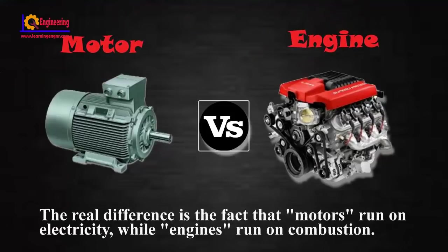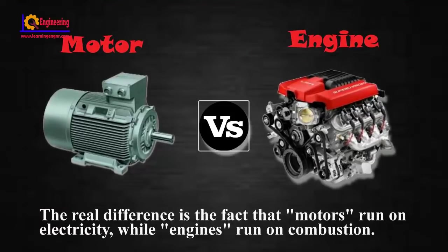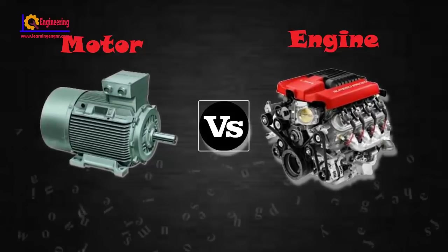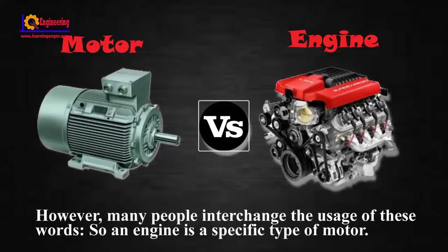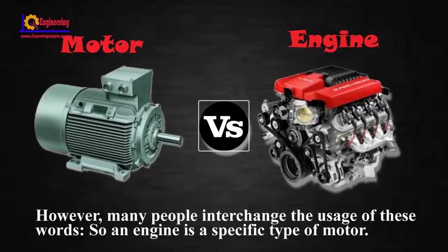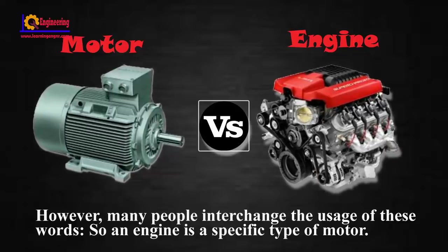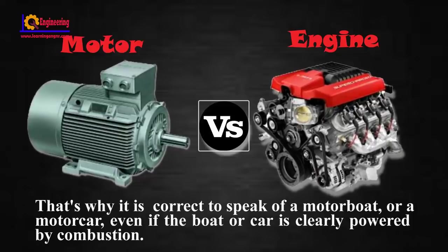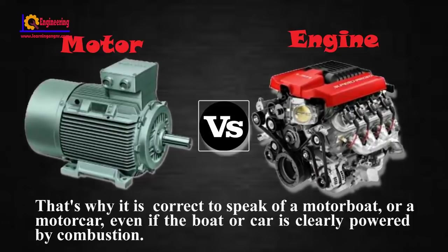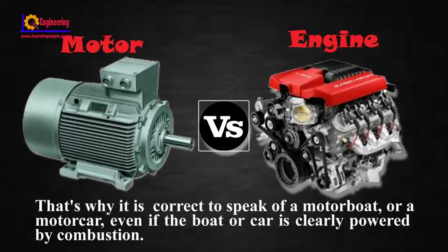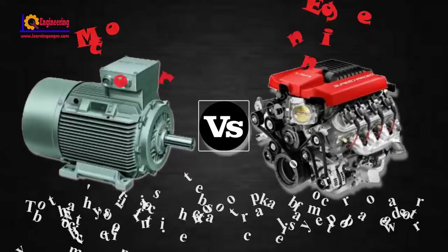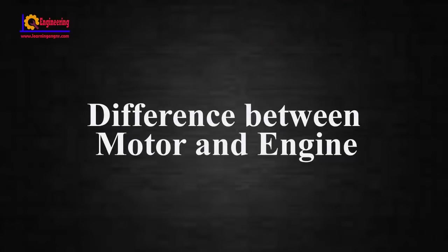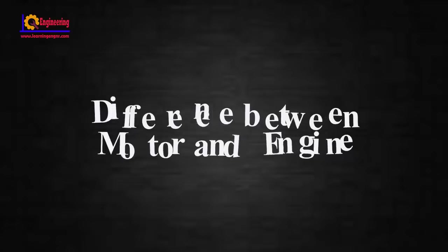The real difference is the fact that motors run on electricity while engines run on combustion. However, many people interchange the uses of these words. So, an engine is a specific type of motor — that's why it is correct to speak of a motor boat or a motor car, even if the boat or car is clearly powered by combustion. In this video, I will go to show you the difference between motor and engine.